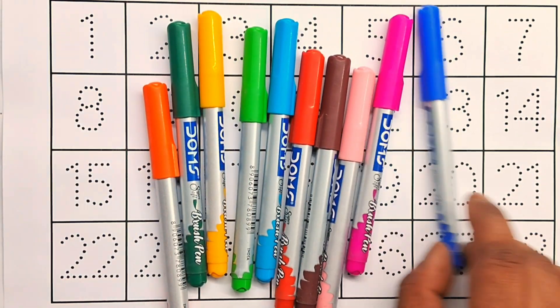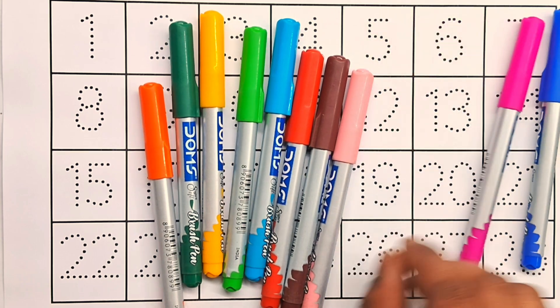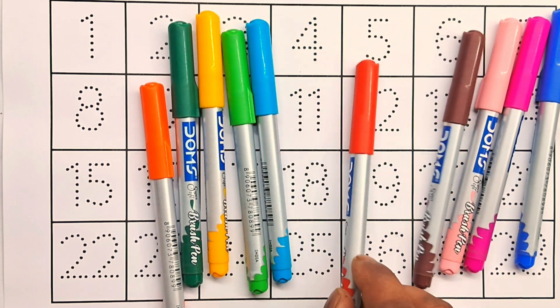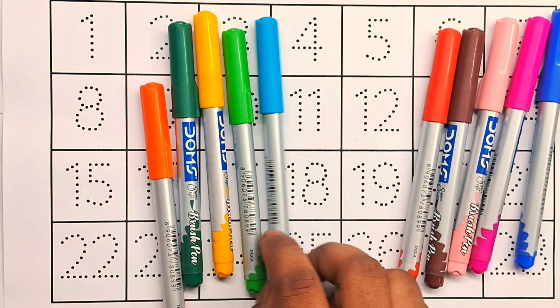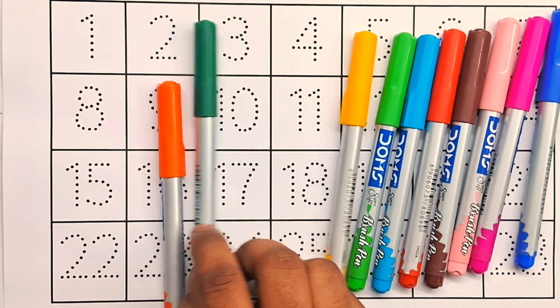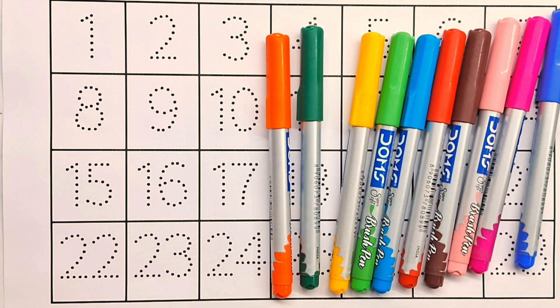First, color name. Blue color, pink color, light pink color, brown color, red color, sky blue color, light green color, yellow color, green color, and orange color.